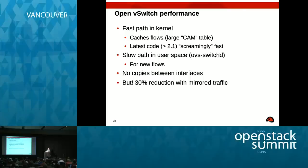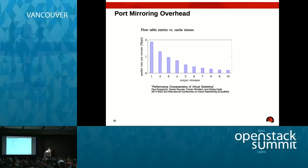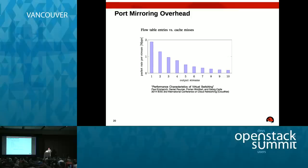I measured this 30% reduction myself and found a paper from last year confirming it. The table shows performance by number of times a packet is mirrored: no mirror is baseline; one mirror gives a 30% reduction; each additional mirror drops throughput further. So this is a serious overhead worth discussing.